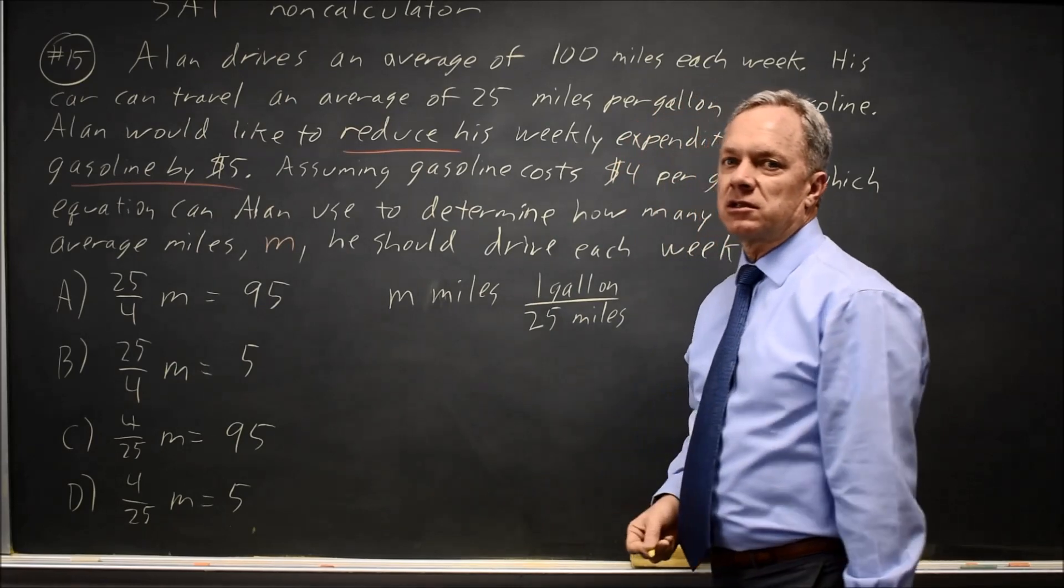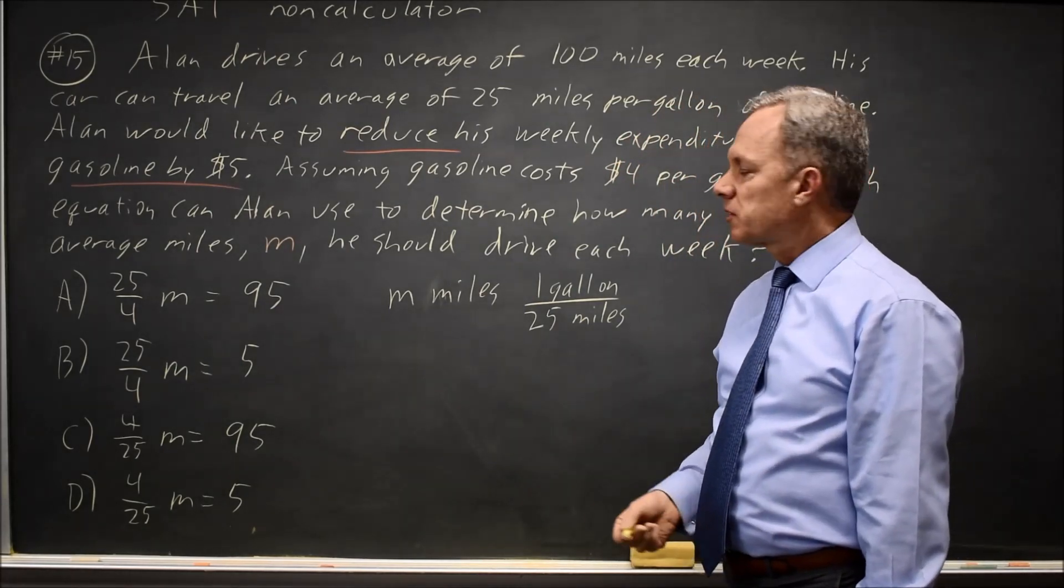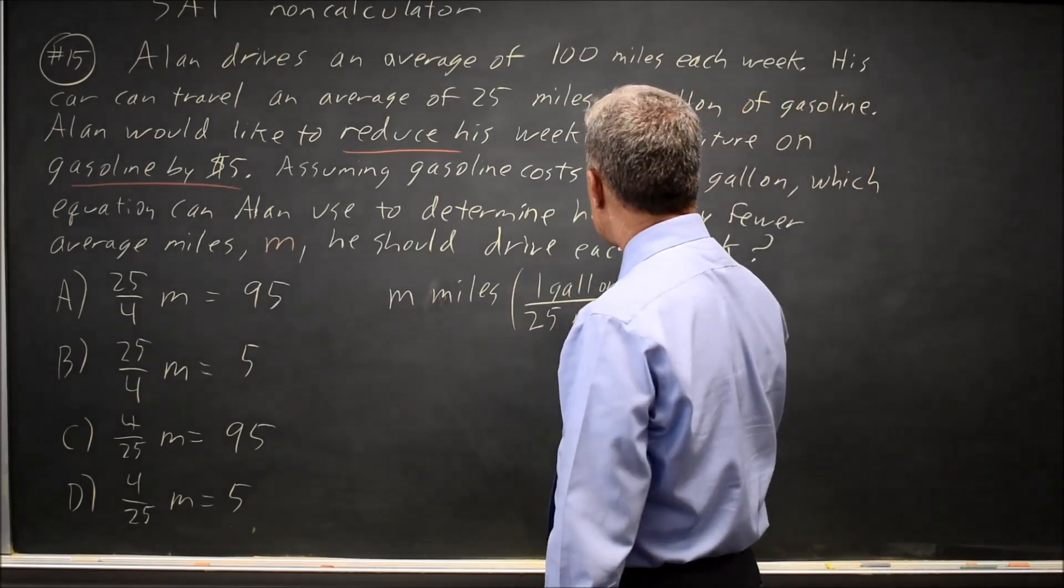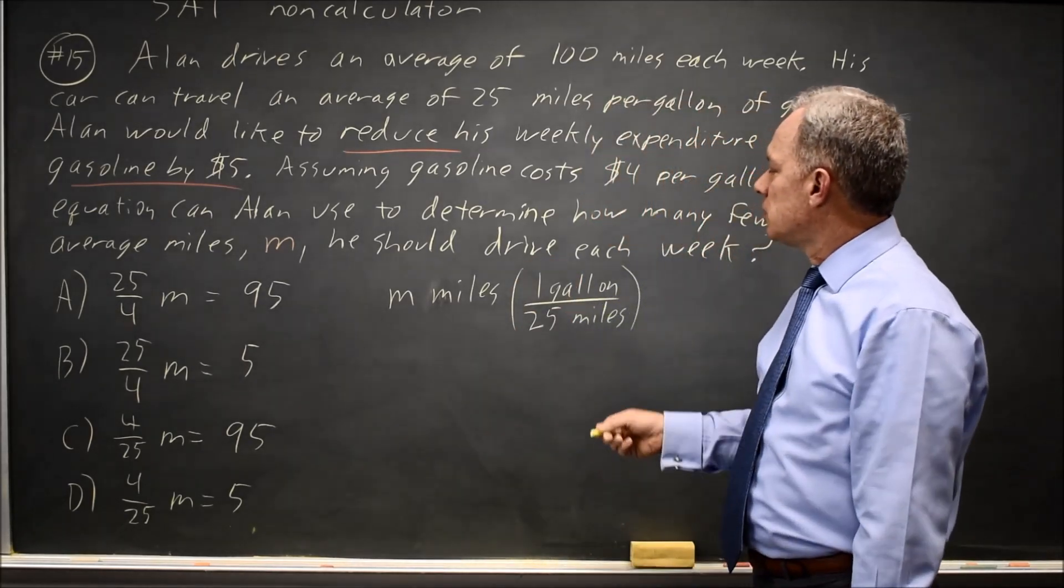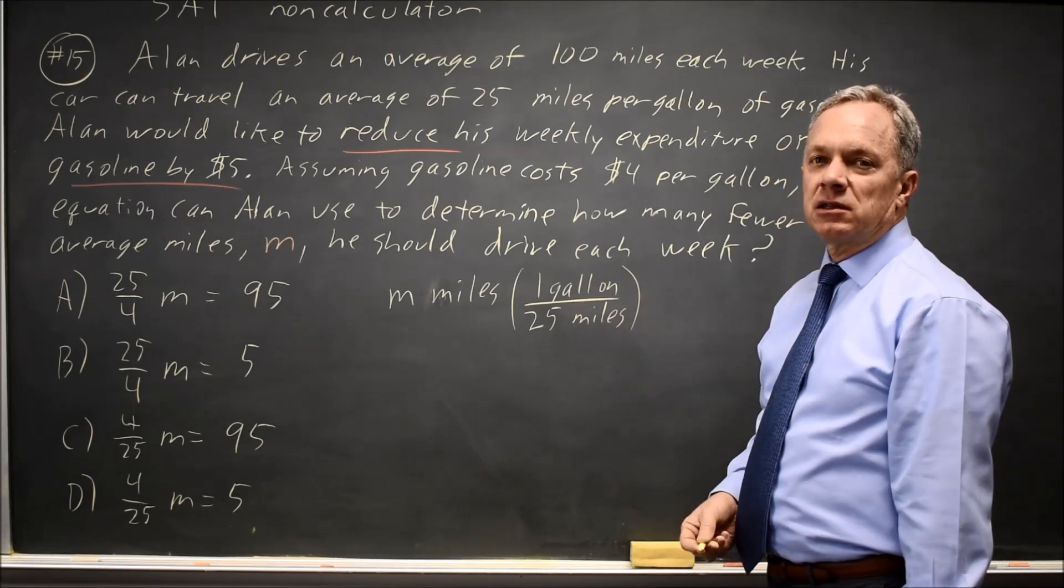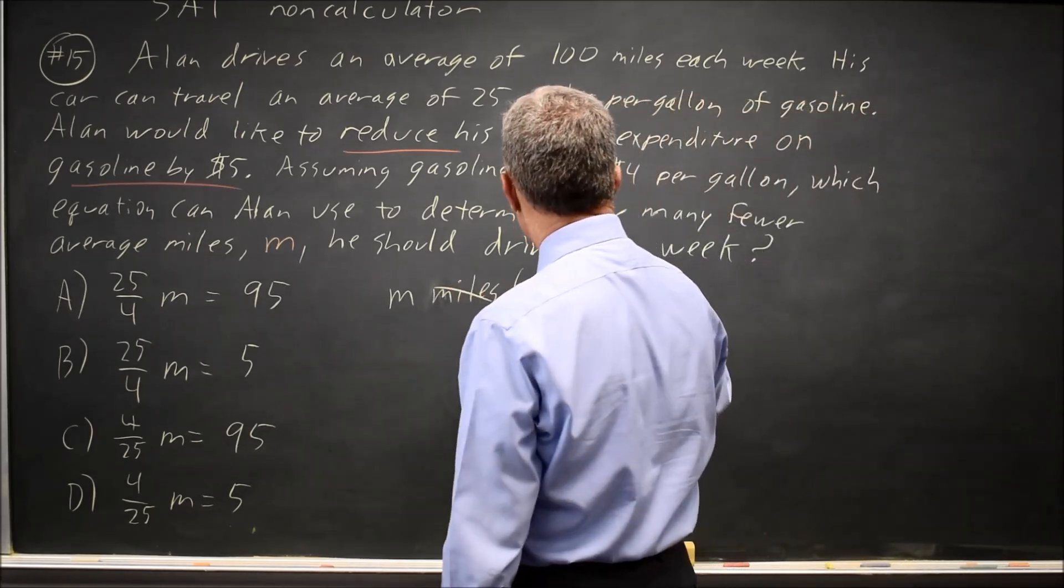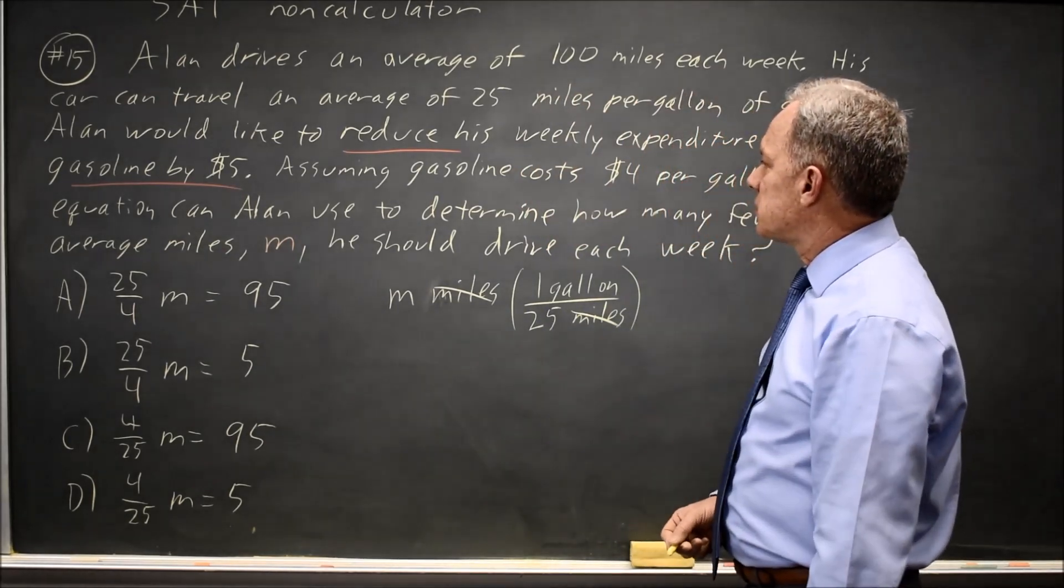This is very much like the way we convert units in chemistry, where we write an expression where the numerator and denominator correspond, so we're essentially multiplying by one because 25 miles of driving equals one gallon of gasoline. And now our miles cancel, and I have units of gallons.